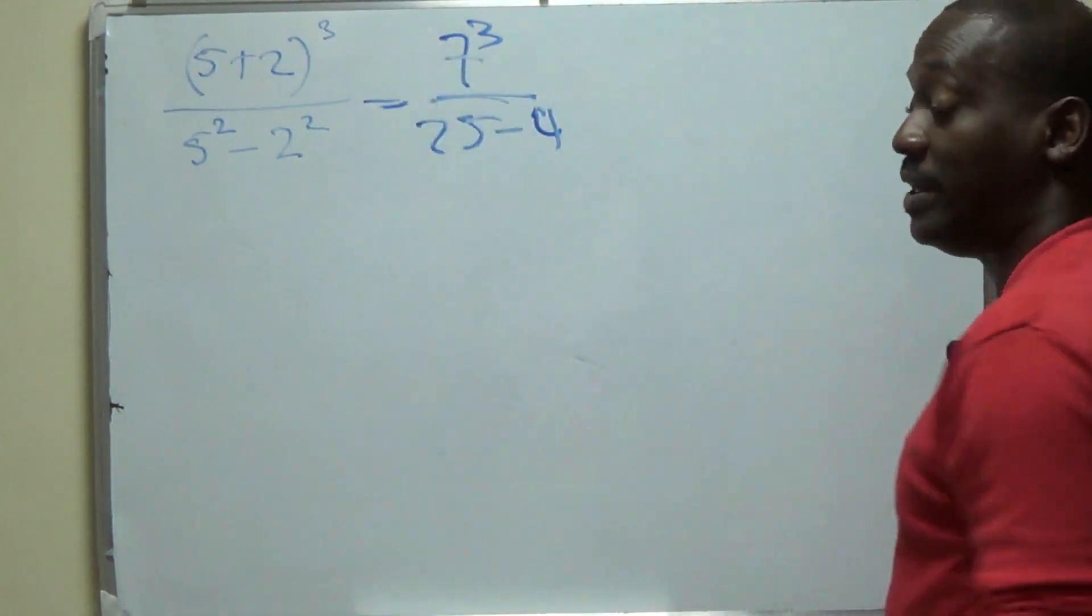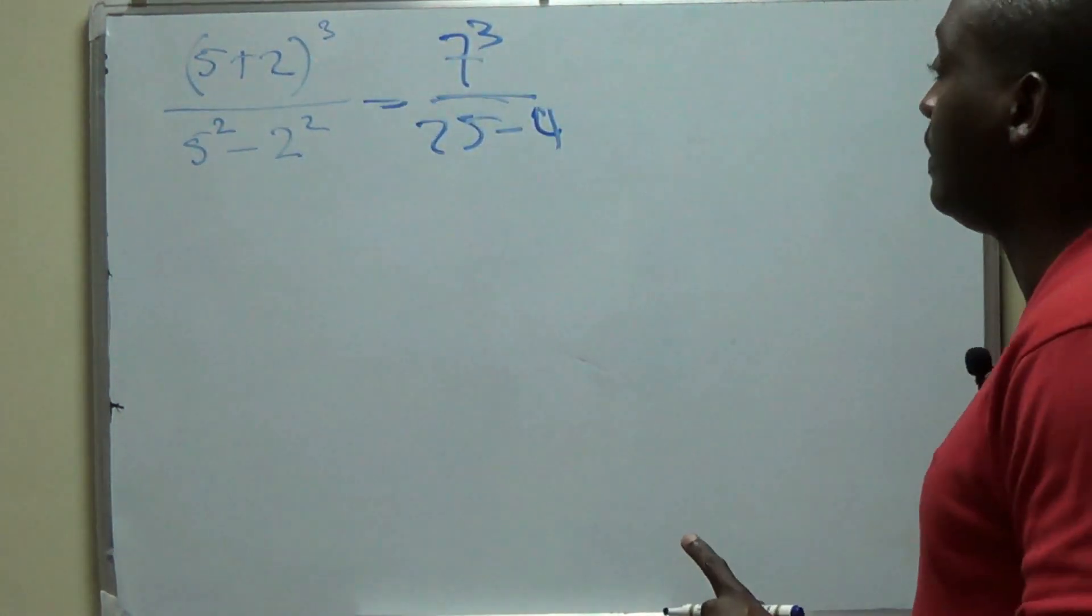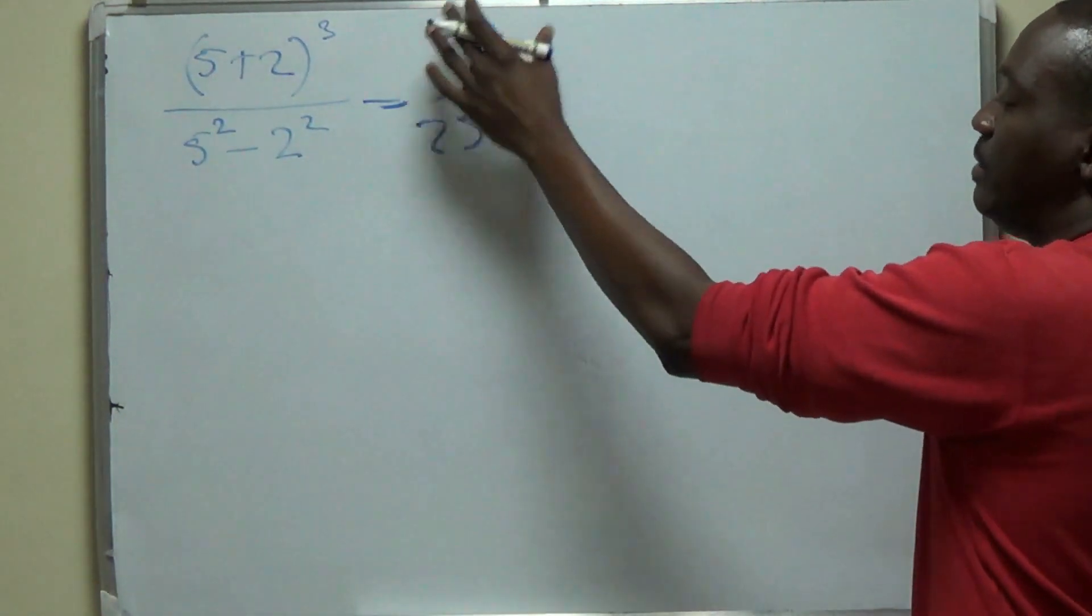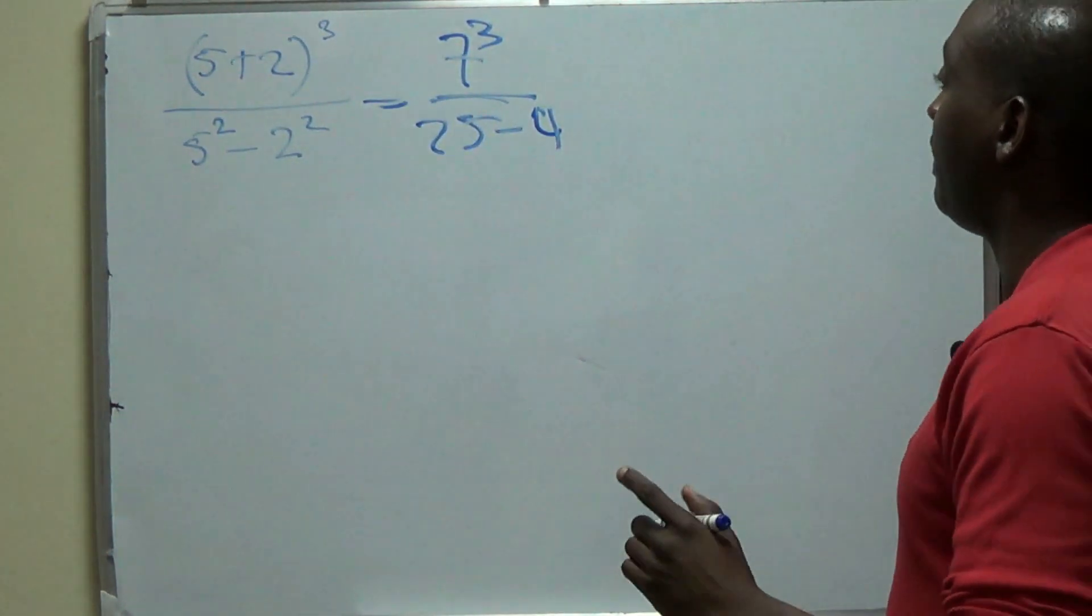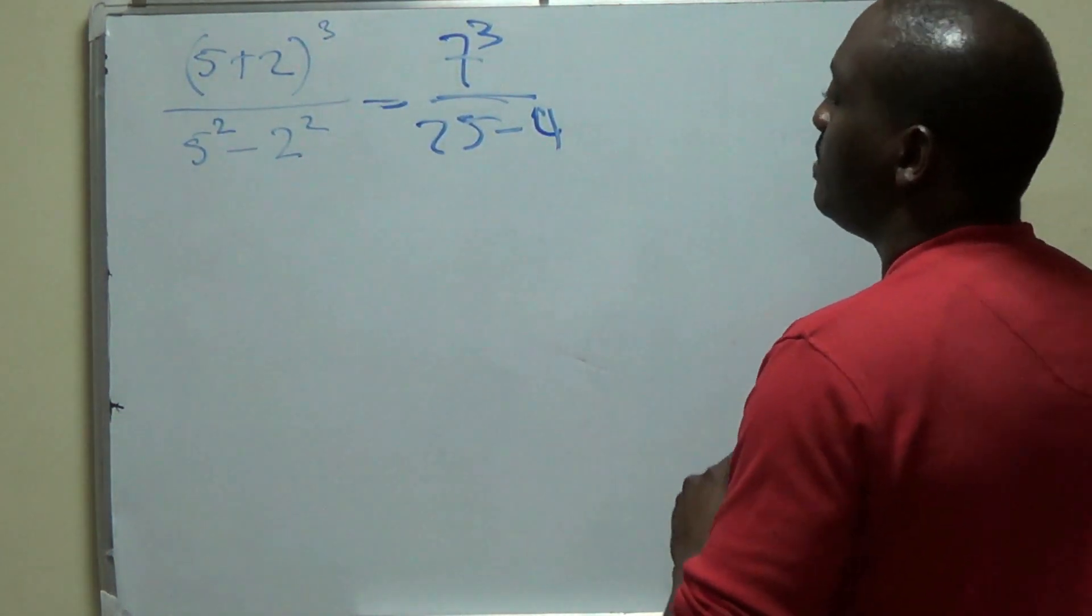Now, remember you don't have the calculator in a multiple choice setting, so you'd have to multiply this out. 7 squared, you should know by now, is 49. And 49 by 7 would give us, we go in the corner here now,